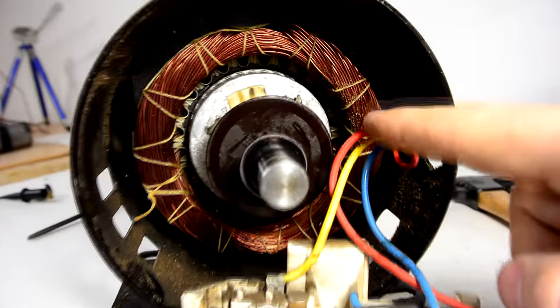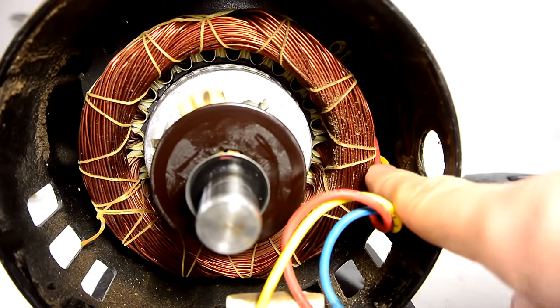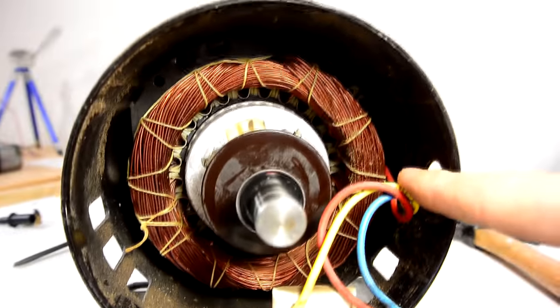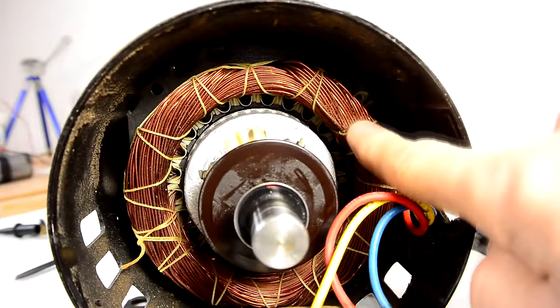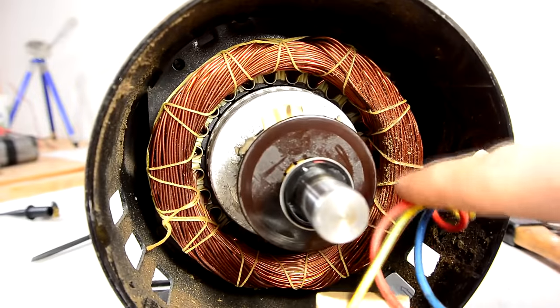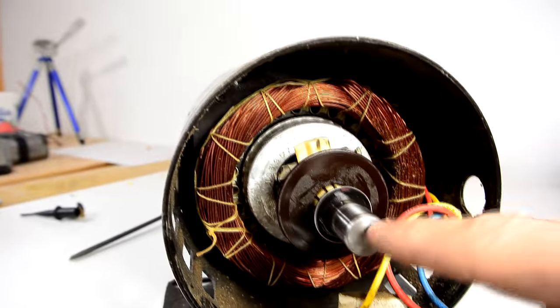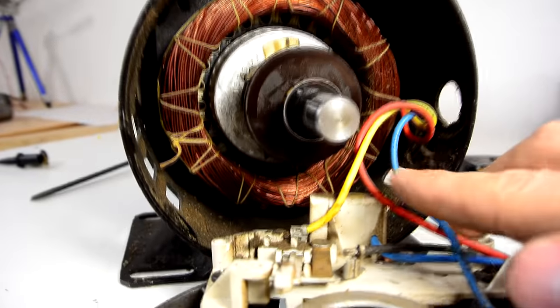Of course where there's a will there's a way so I could potentially dig out this connection in there and break it and bring out another wire. But the problem is there's no way to remove the stator from the case so I'd literally have to cut a hole in the case to get at it and I think that would just be more trouble than it's worth. So for all practical purposes this motor can't be reversed because they saved one wire.